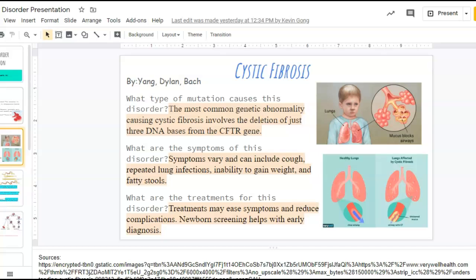Here's cystic fibrosis by Yang, Dylan, and Bach. This is caused by a deletion, which is a frameshift mutation. And it includes trouble with the lungs, trouble with your digestive system. And they try to reduce complications, but it's a really tough one.